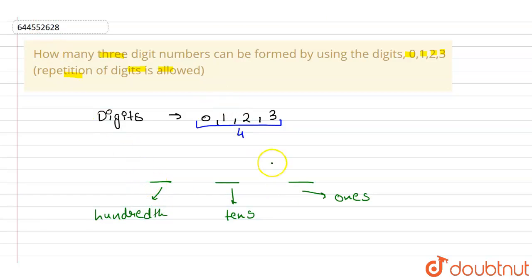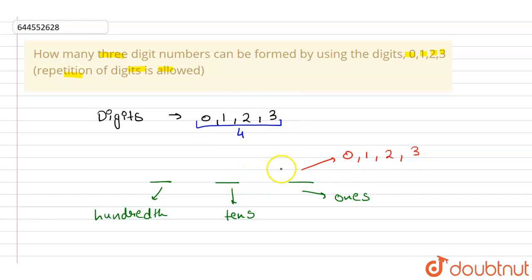Starting from the ones place — this ones place can accommodate either 0, 1, 2 or 3, so the number of ways to fill the ones place is 4. Similarly, the tens place can also accommodate all four digits: 0, 1, 2 and 3, so the tens place can also be filled in 4 ways.